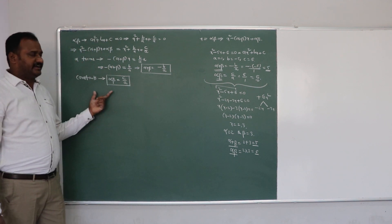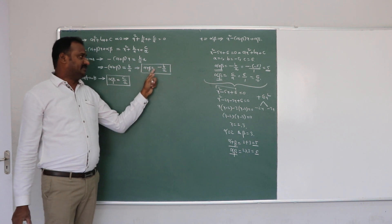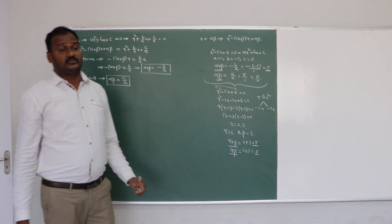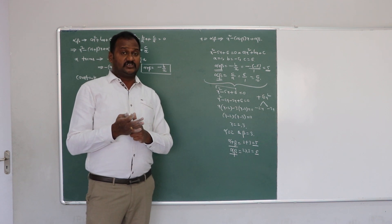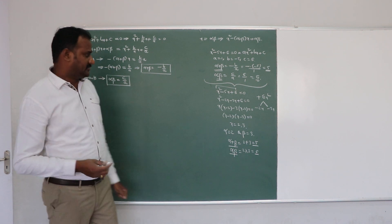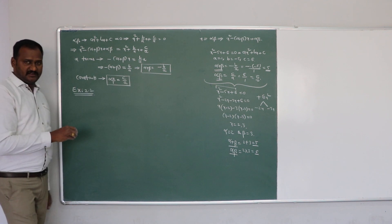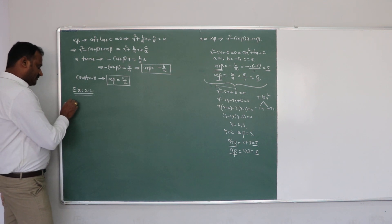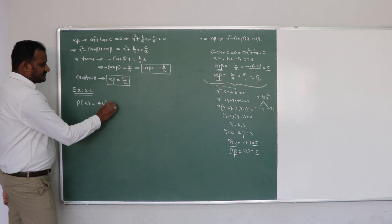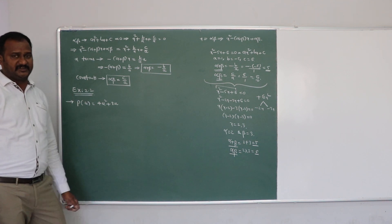Therefore, without actually finding the zeros of the polynomial, we can easily figure out the sum of zeros and the product of zeros by using alpha plus beta equals minus b/a and alpha times beta equals c/a. Now there are some questions in Exercise 2.2 asking us to find zeros of quadratic polynomials and verify the relationship between zeros and coefficients.